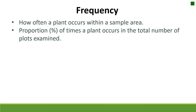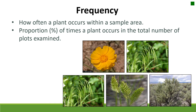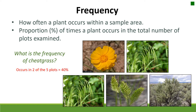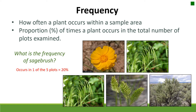Frequency is one method used in rangelands. It's a measure of how often a plant occurs within a certain sample area — essentially present/absence data — from which we get the proportion of times it occurs over the total number of plots examined. For example, looking at five sample areas, cheatgrass occurs in two out of five observations, so the frequency is 40%. Sagebrush occurs in one of the five plots, so its frequency is 20%.